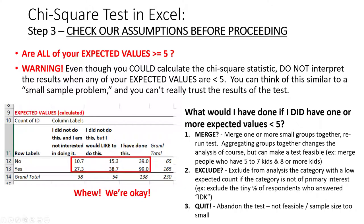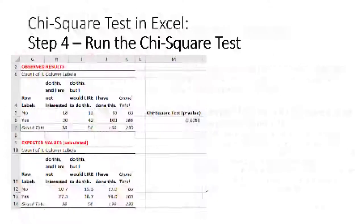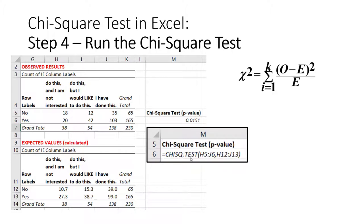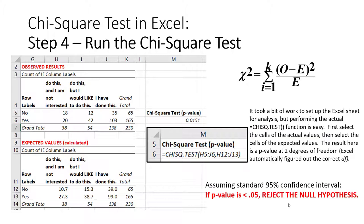We had to do a lot of work to set this up, but actually running the chi-square test is really easy. We simply use the CHISQ.TEST function, select our observed values inside one crosstab, then select the array of expected values, and this returns a p-value. Assuming a standard 95% confidence interval, since our p-value is less than 0.05, we reject the null hypothesis. In other words, we are willing to claim there really is an association between these two variables.